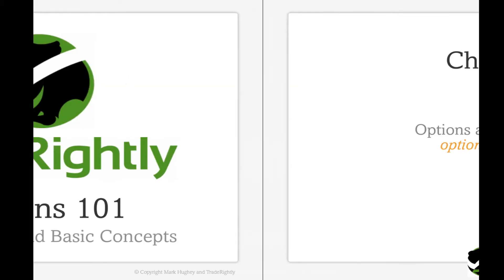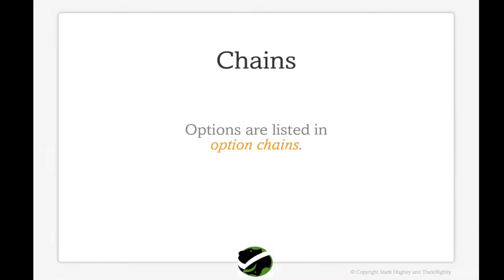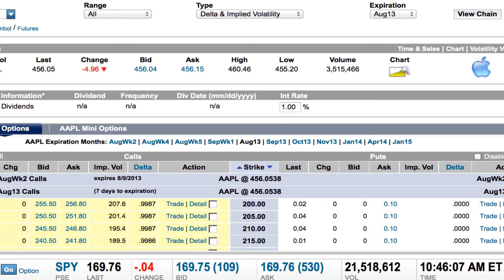So today in part five, we're going to talk about option chains. Options are listed in option chains. That is when we go to purchase or sell, where we're executing our trades. We are looking at options in what are called chains. It's a lot harder to explain than it is to just show you, so we're going to go over to a broker and look at an option chain.